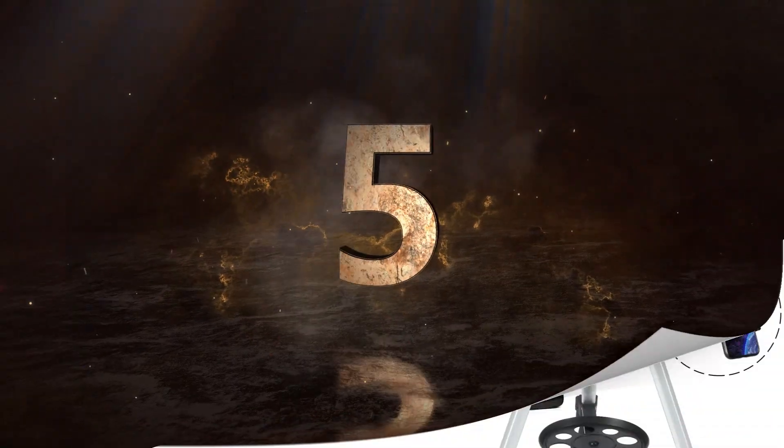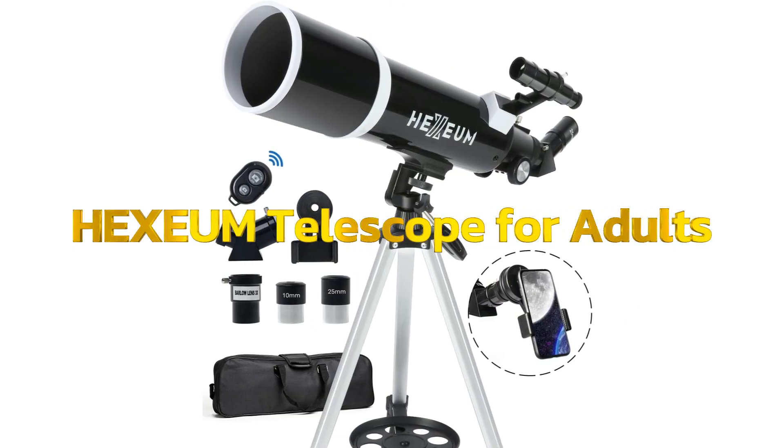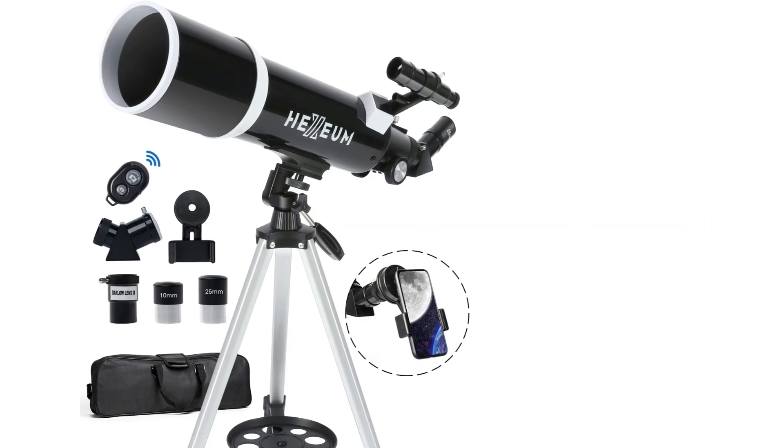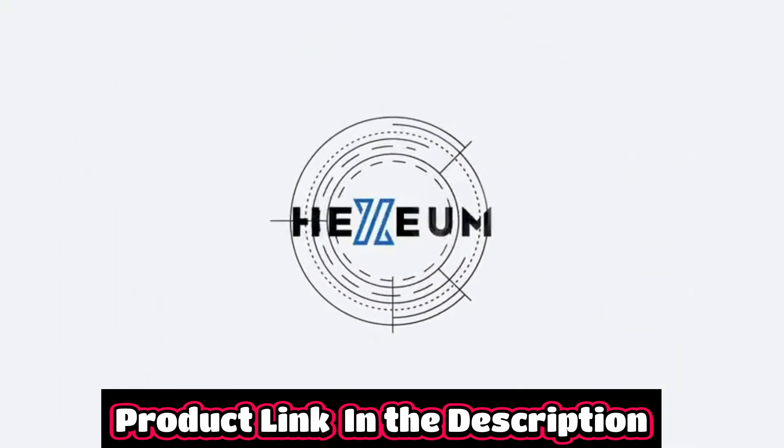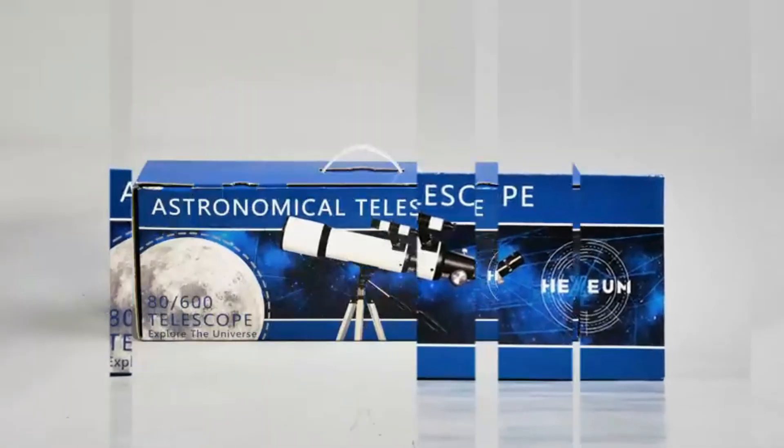Number 5. Hexium Telescope for Adults and Beginner Astronomers. 80mm Aperture 600mm Fully Multicoded High Transmission Coatings with AZ Mount Tripod Phone Adapter, Carrying Bag, Wireless Control. Brand Hexium. Model name AZ-80600.